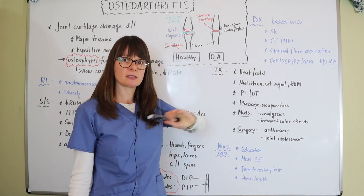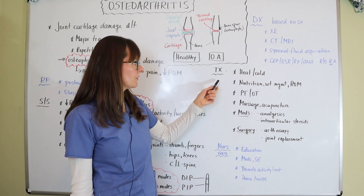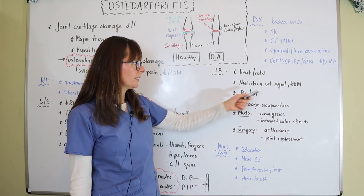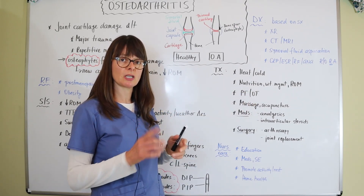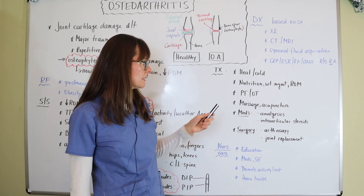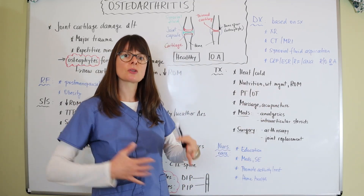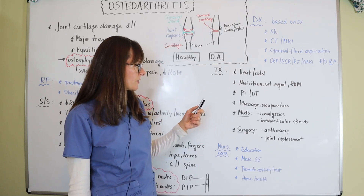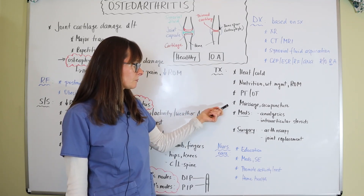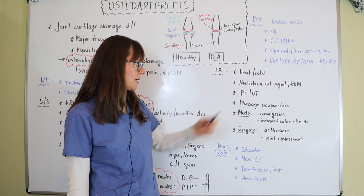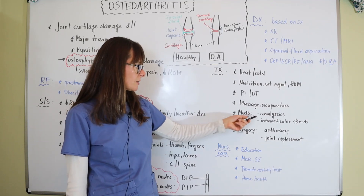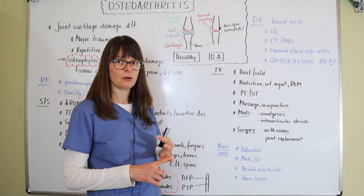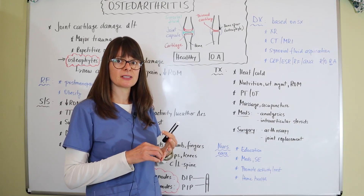Treatment for osteoarthritis includes heat or cold — whatever feels better on the affected joint. Healthy nutrition is always important, and weight management helps reduce stress on joints, particularly the lumbar spine, hips, and knees. Active or passive range of motion and exercise keep the joints moving and prevent extra stiffness. Collaboration with physical therapy and occupational therapy is important, and sometimes alternative measures such as massage and acupuncture can be helpful.